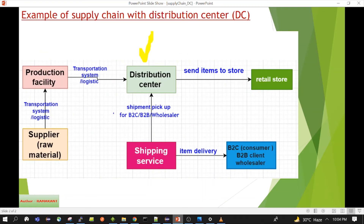Now we will see one example of a supply chain with a distribution center so we can understand how those things work. In this diagram, at the top we have a supplier who supplies raw material to the production facility. The production facility produces finished goods, and those finished goods are transferred to the distribution center for storage, which can later be used for order fulfillment. I have marked the distribution center with a yellow tick in the diagram.